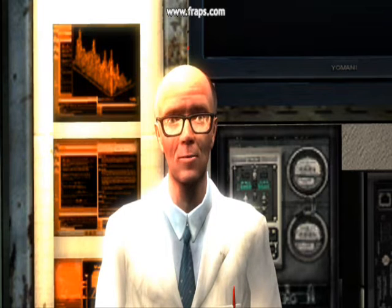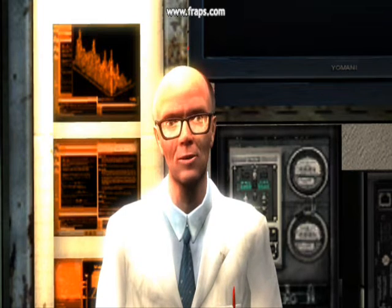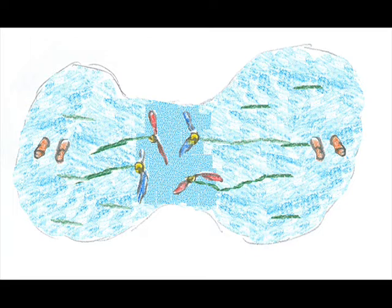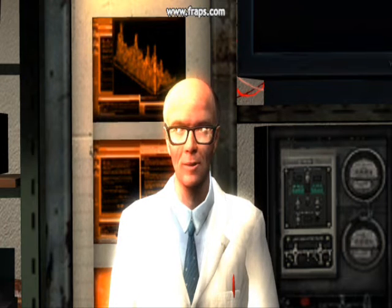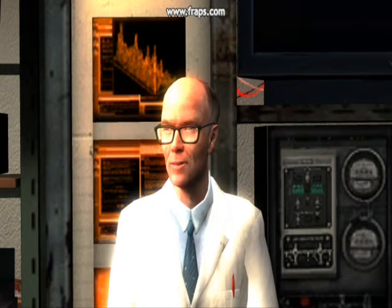The third stage of mitosis is anaphase. During anaphase, the centromeres split and the chromatids stretch apart to opposite ends of the cell.